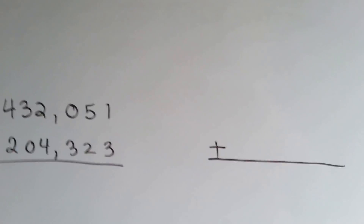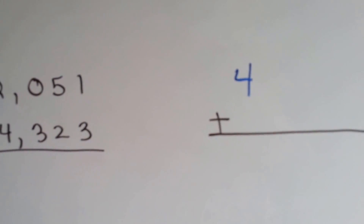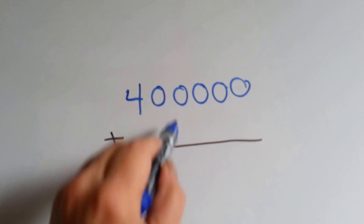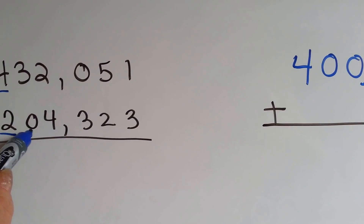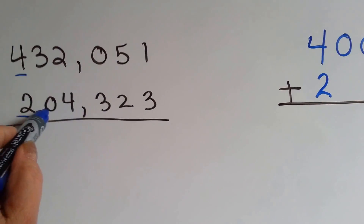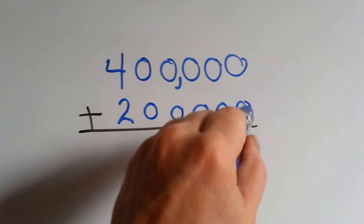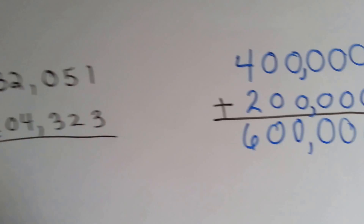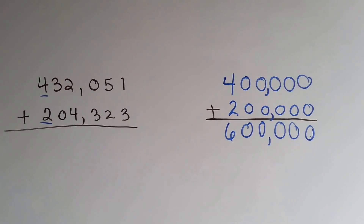Let's try it again. This is the number we're rounding to. The 3 tells the 4 to stay the same. It's done with its job — it becomes a 0, and so do all of these, so we need 1, 2, 3, 4, 5 zeros. We put in our comma. Here we have a 2. The 0 is not bigger than 5, so it tells the 2 to stay the same. It's done with its job and becomes a 0, and so does everyone else, so we've got 1, 2, 3, 4, 5 zeros again. We put our comma in and we add — comma — 6. So 432,051 plus 204,323 is estimated to be about 600,000.